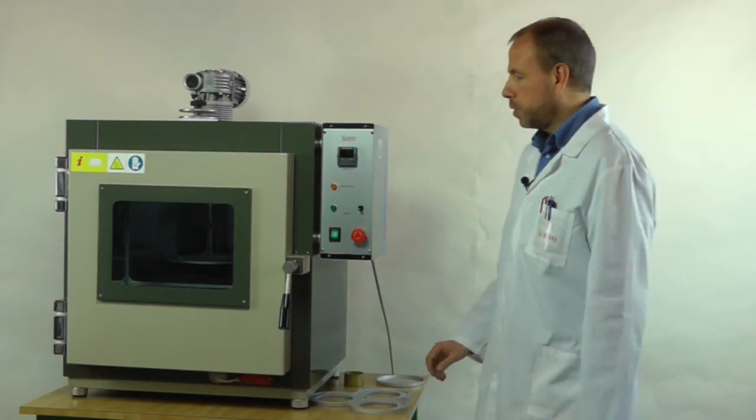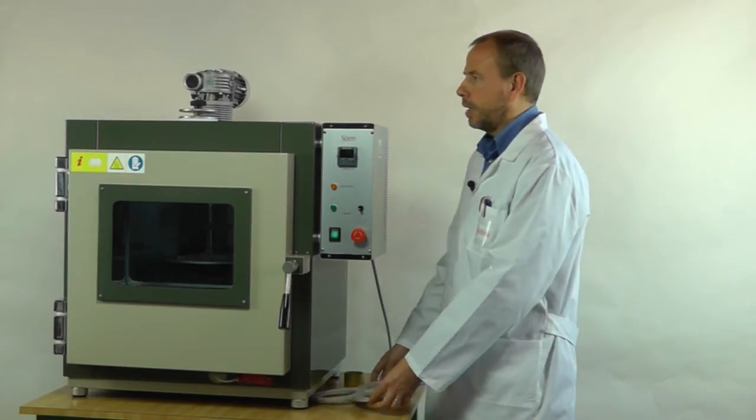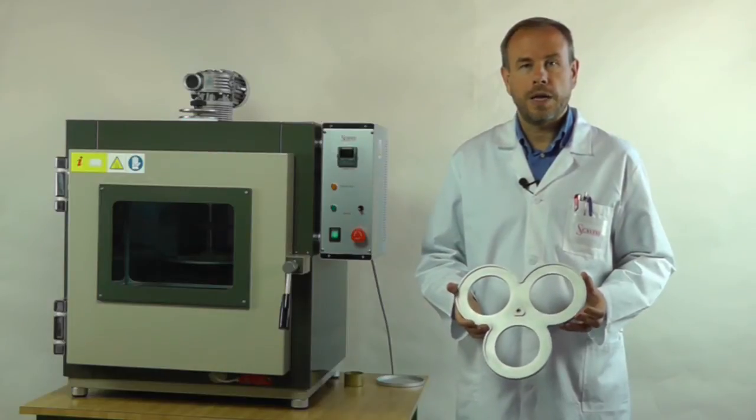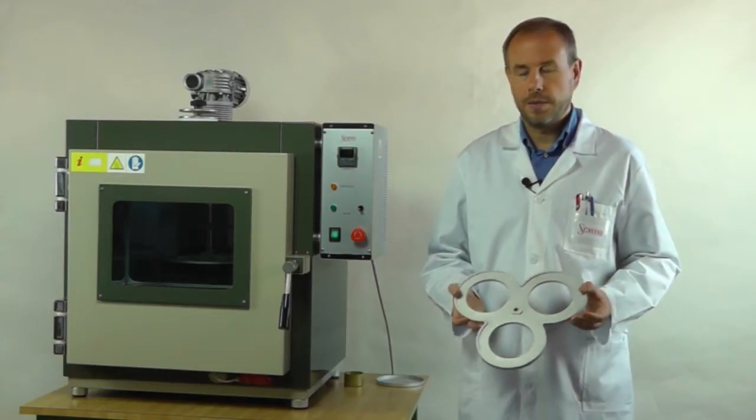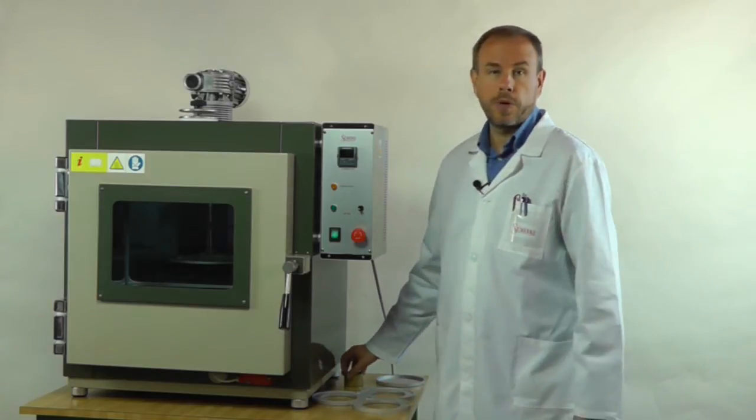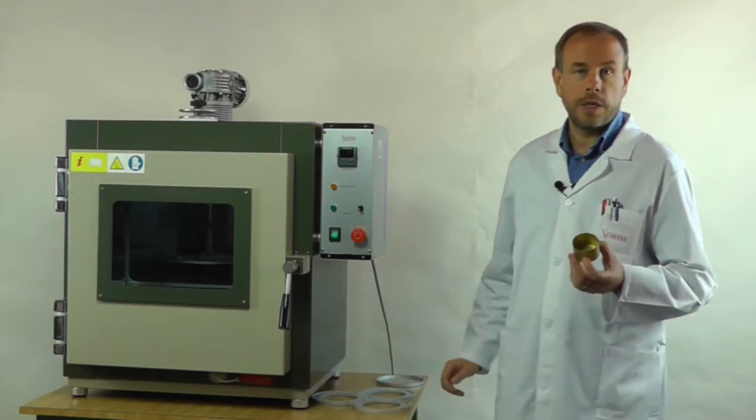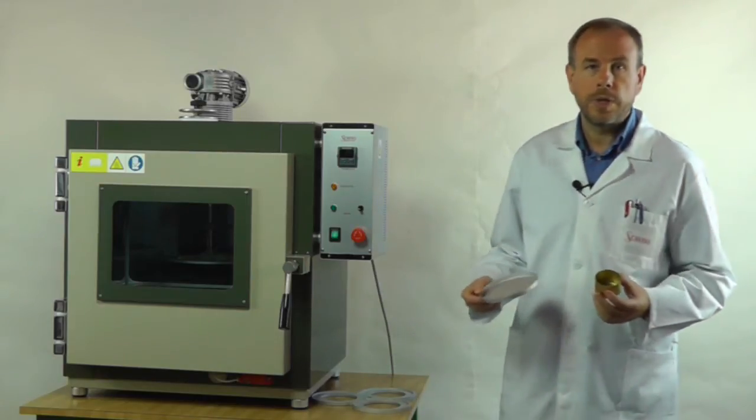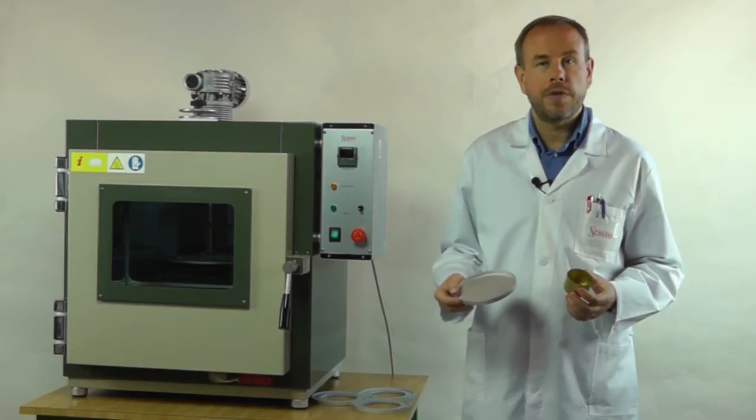This equipment can be used also for tests according to ASTM D1754, by simply replacing the shelf with this shelf in my hands. Also the sample container should be changed. This one is the sample container for D6, this one is the sample container for D1754.